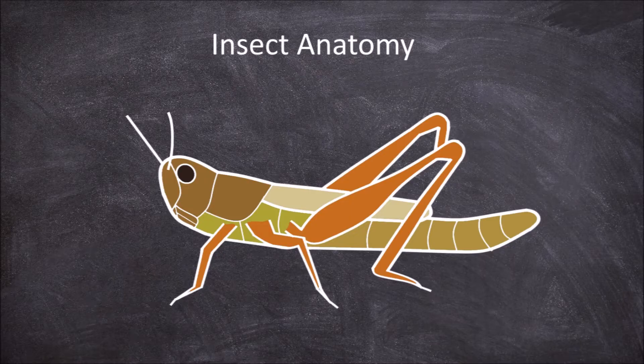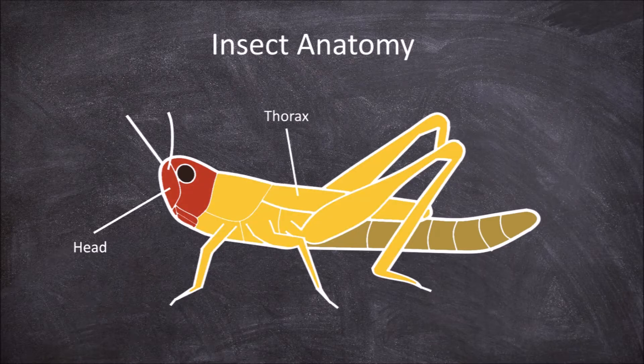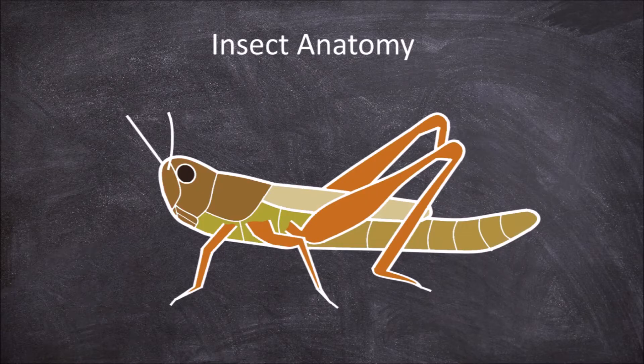Insects consist of three regions: the head, the thorax and the abdomen. They also all possess three pairs of legs.